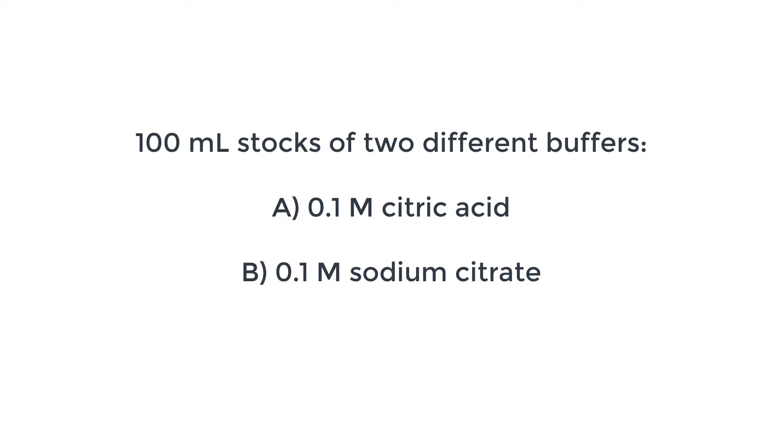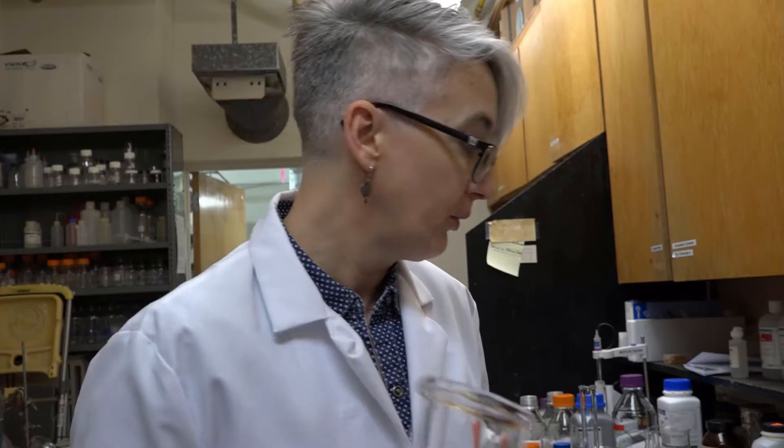To make the TBO, the first thing that we need to do is make our citrate buffer. We're going to start by preparing 100 ml stocks of two different buffers. The first is going to be our 0.1 molar citric acid buffer.